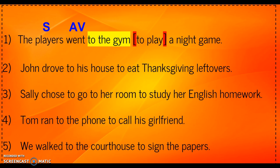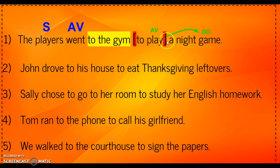Now, thinking about infinitives — infinitives are verbs as well, and verbs can be action or linking. If I look at the infinitive 'to play,' it is an action verb. And an infinitive is allowed to have its own direct object: 'to play whom or what' — 'to play a game.' So in this case, 'game' is the direct object, but it goes with this infinitive verb. I did it in a different color and drew an arrow to show what its direct object is. Most of the sentences on this page are going to have direct objects that go with the infinitive, so just take a try at that as you go.